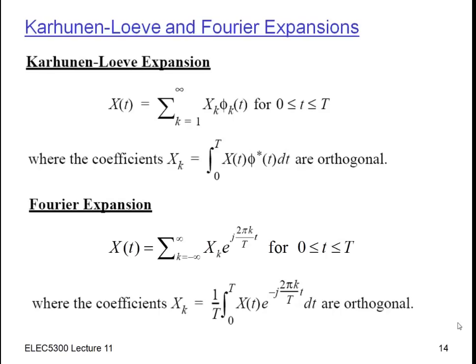To discuss the Karhunen-Loeve transformation, I'd like to draw the connection to the Fourier expansion, and through that similarity you'll be able to see how they're connected and the proofs of the properties are very similar to the case for Fourier. So let's compare the Karhunen-Loeve transformation with a Fourier series expansion. You can see they're very similar.